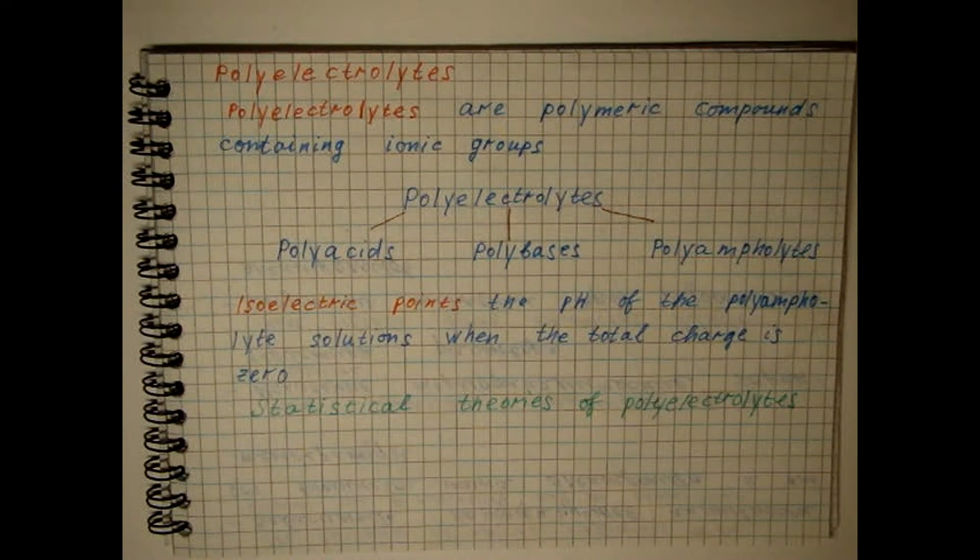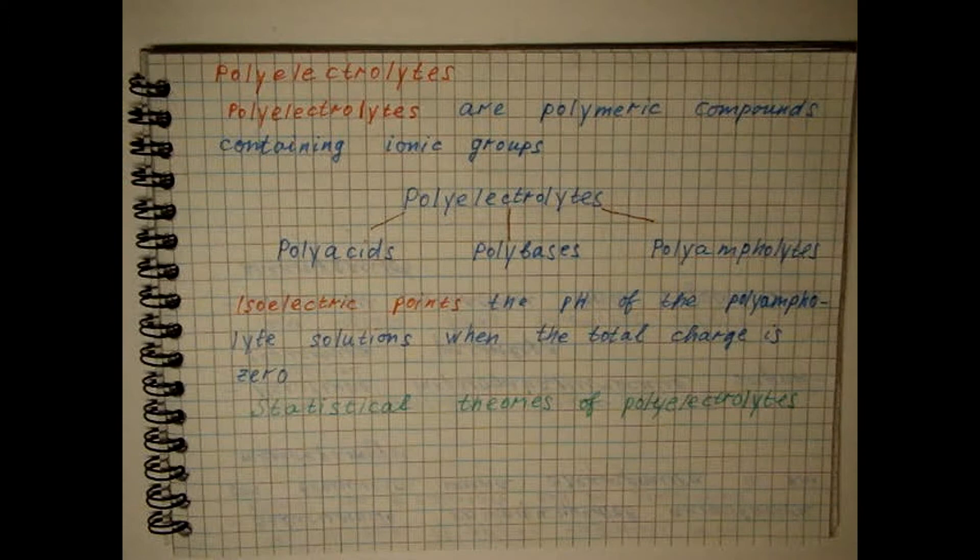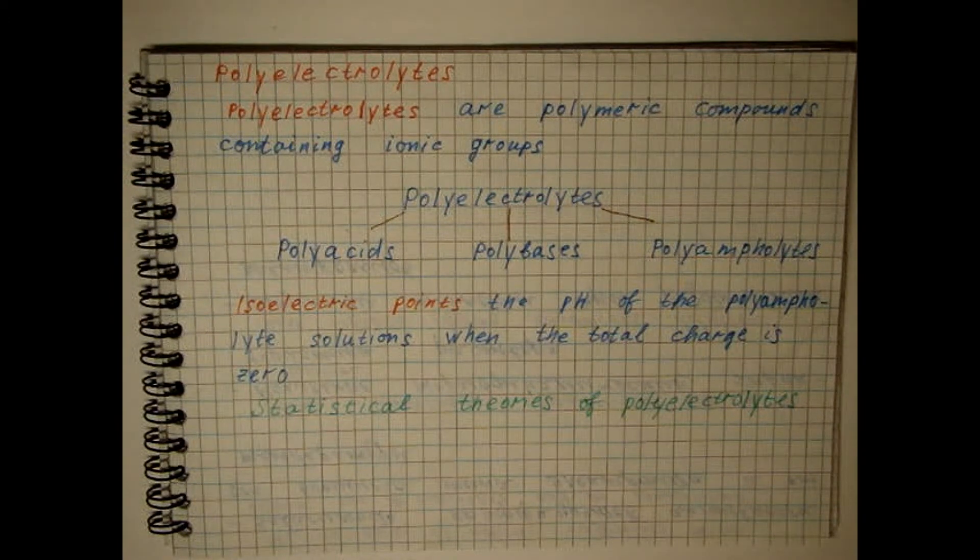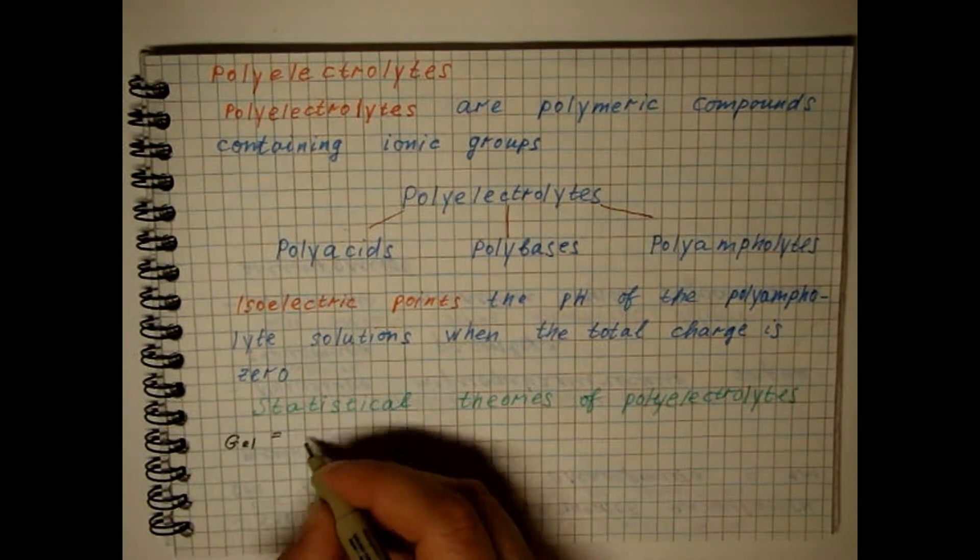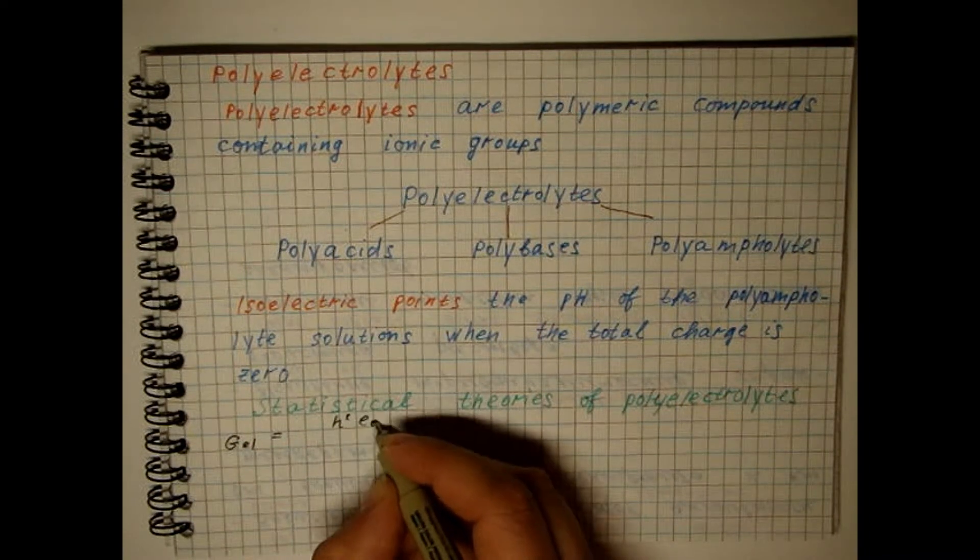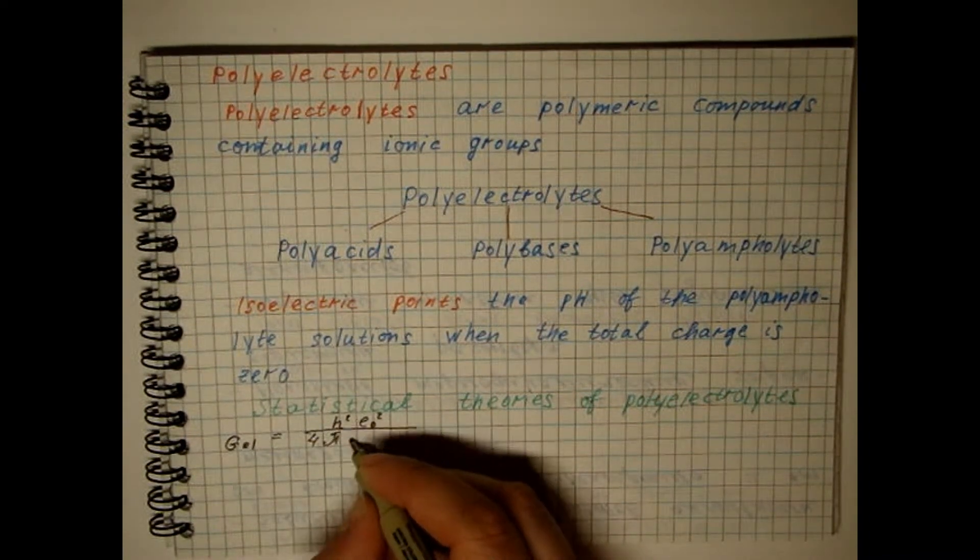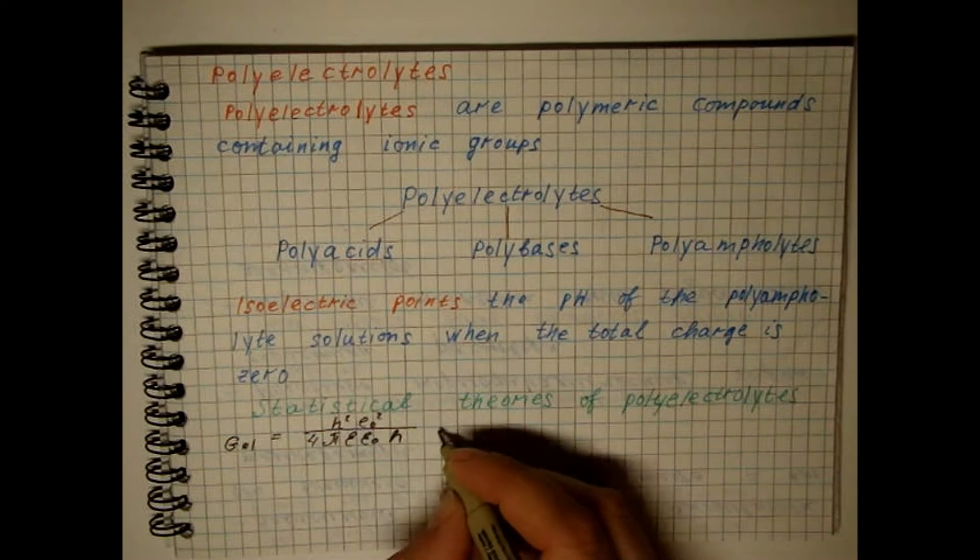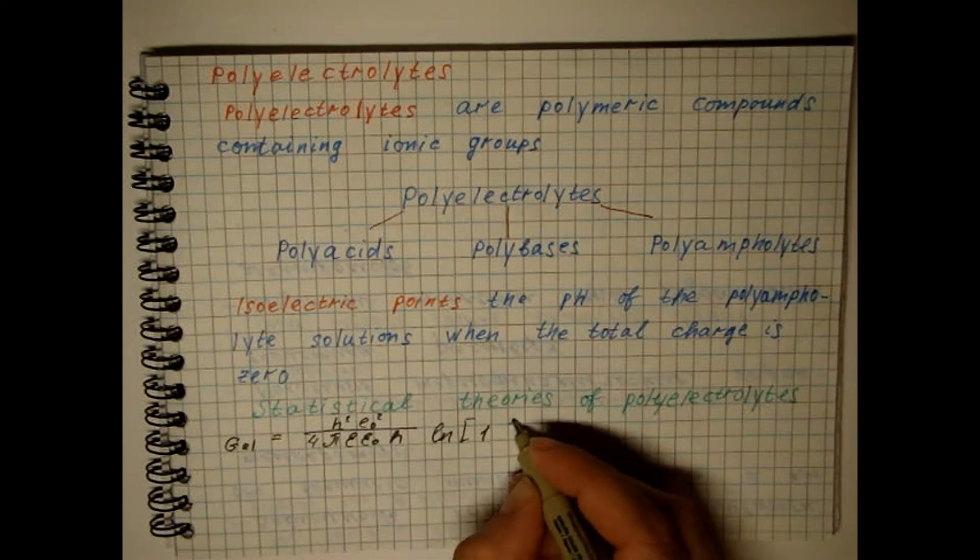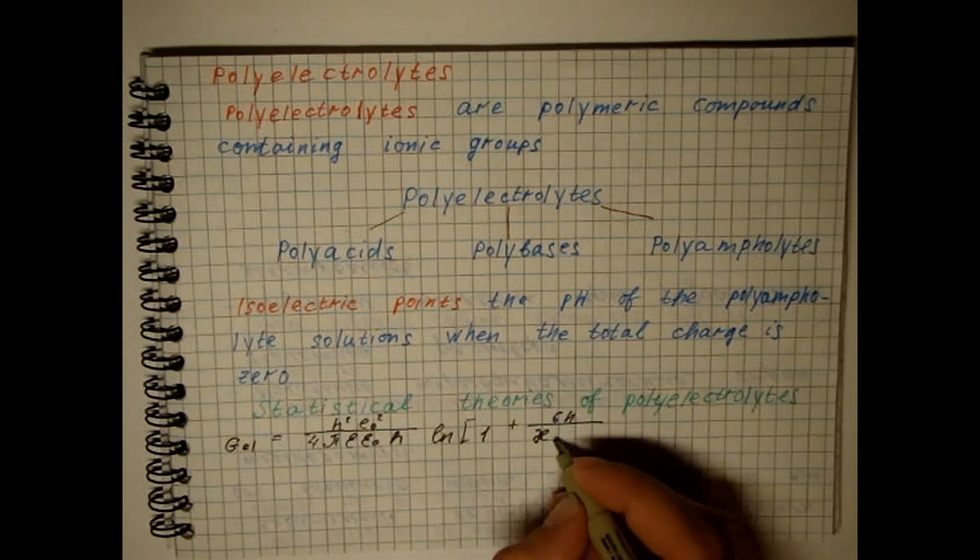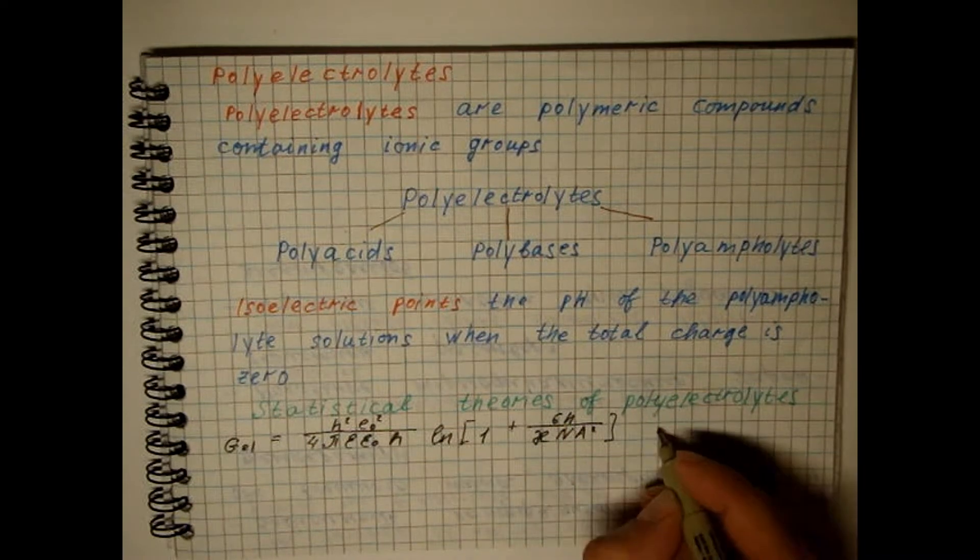For the potential of the electrostatic field, the Debye-Huckel limit law is used. The following expression was obtained for the free electrostatic energy of a polyelectrolyte solution.